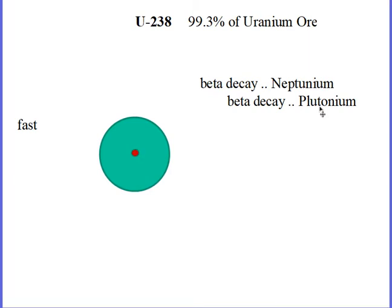Well, that is important. Plutonium is a bad player. So it is unfortunate that when 238 captures a fast neutron, you get plutonium. We will talk more about that.